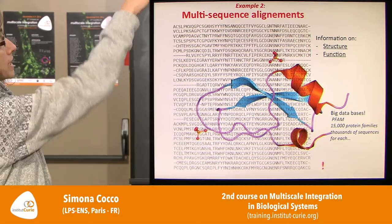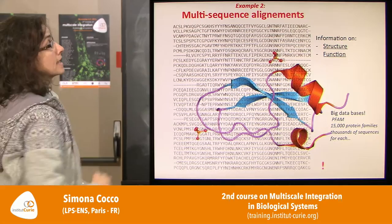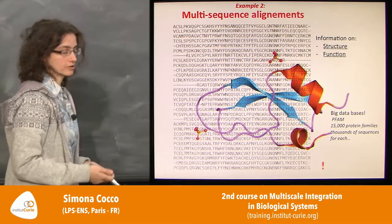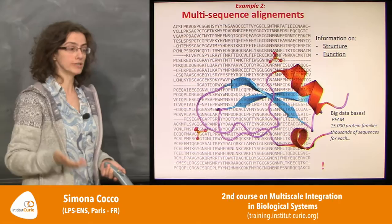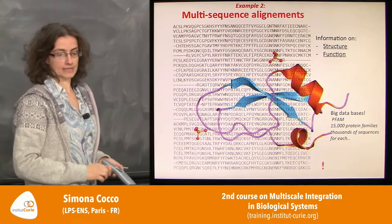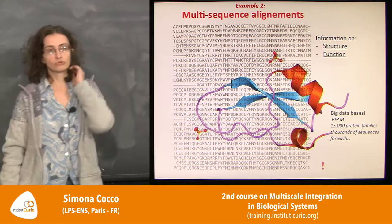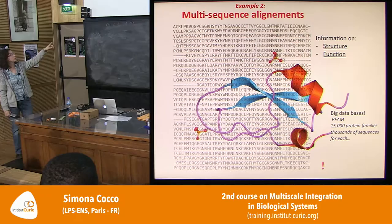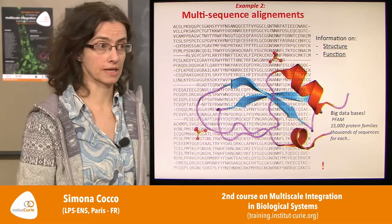All sequences in a family fold in the same way. For example, this small protein domain is called the trypsin inhibitor, which inhibits an enzyme in digestion. All these sequences sampled from different organisms fold in the same way and perform the same function. The idea is to learn how to read the structure and function of the protein not from a single sequence but from the collection of sequences which all behave in the same way.